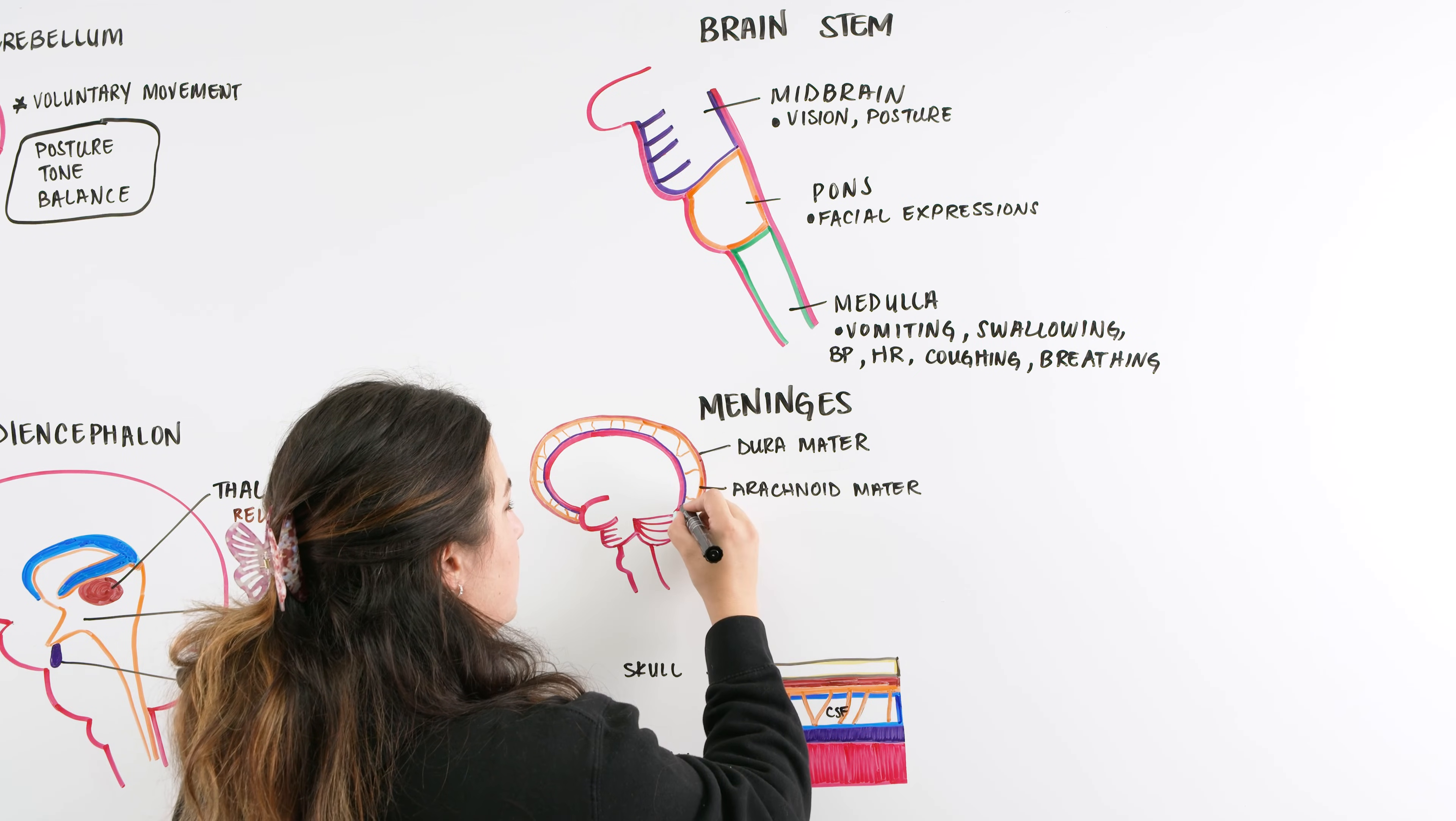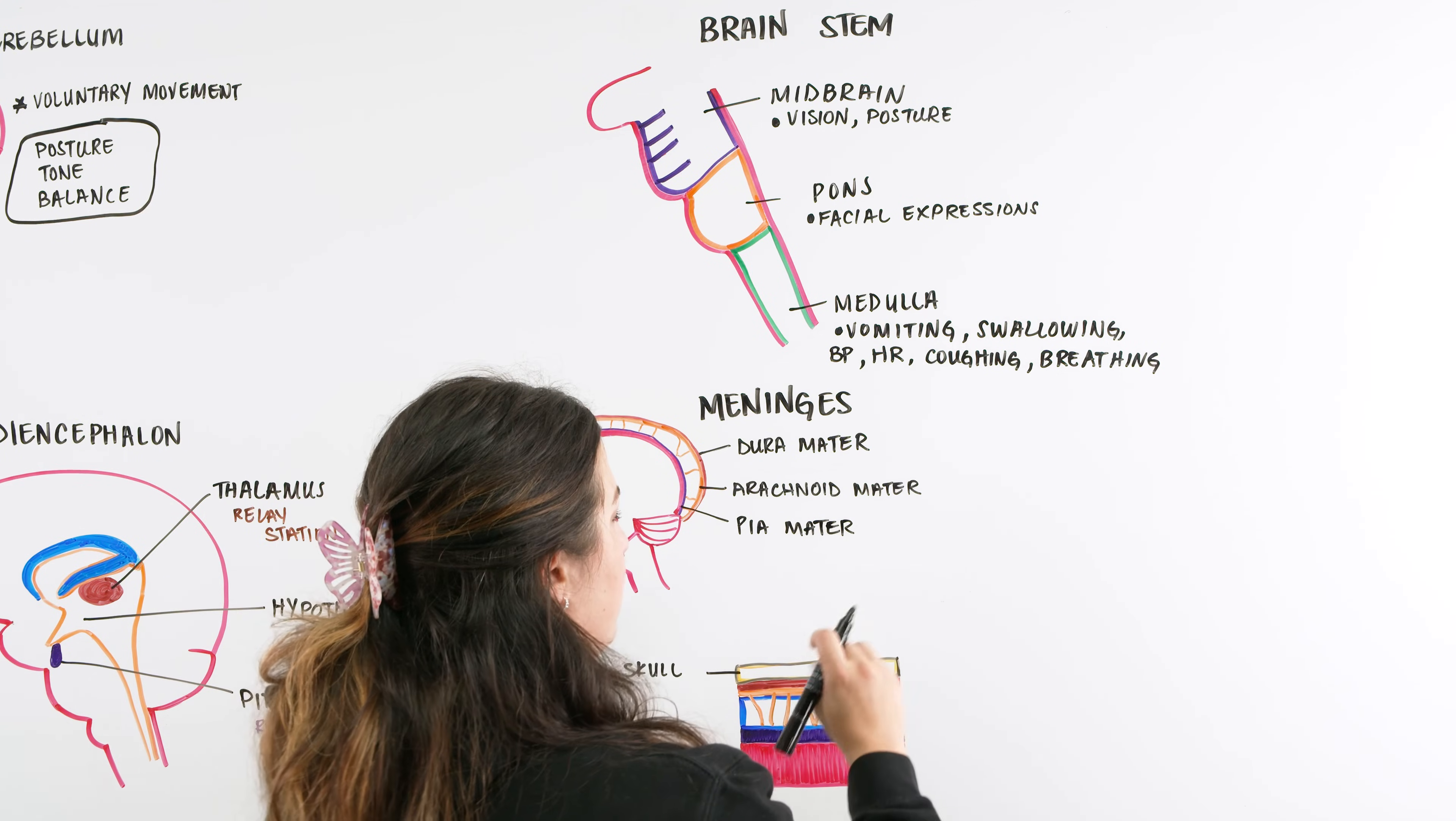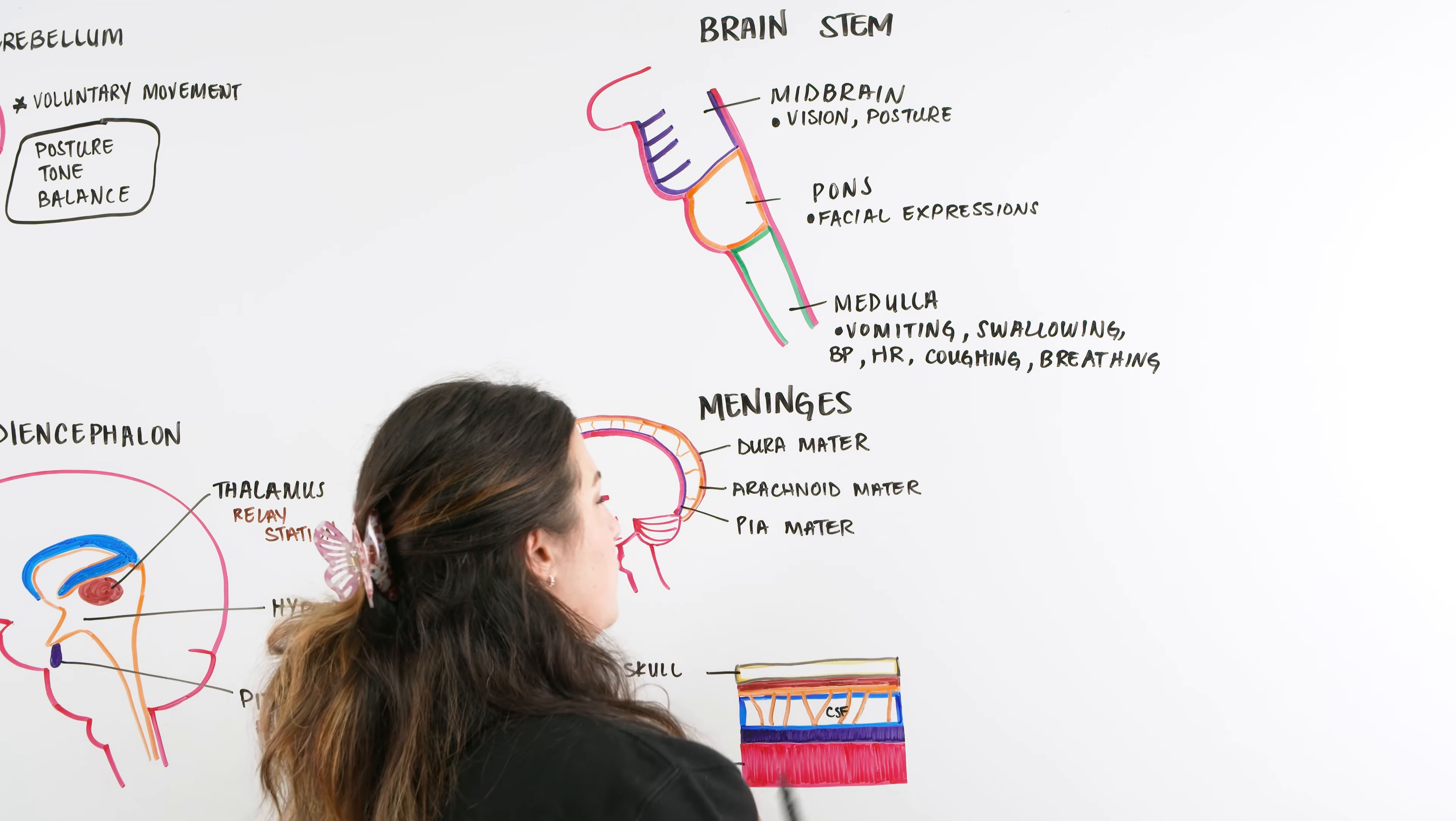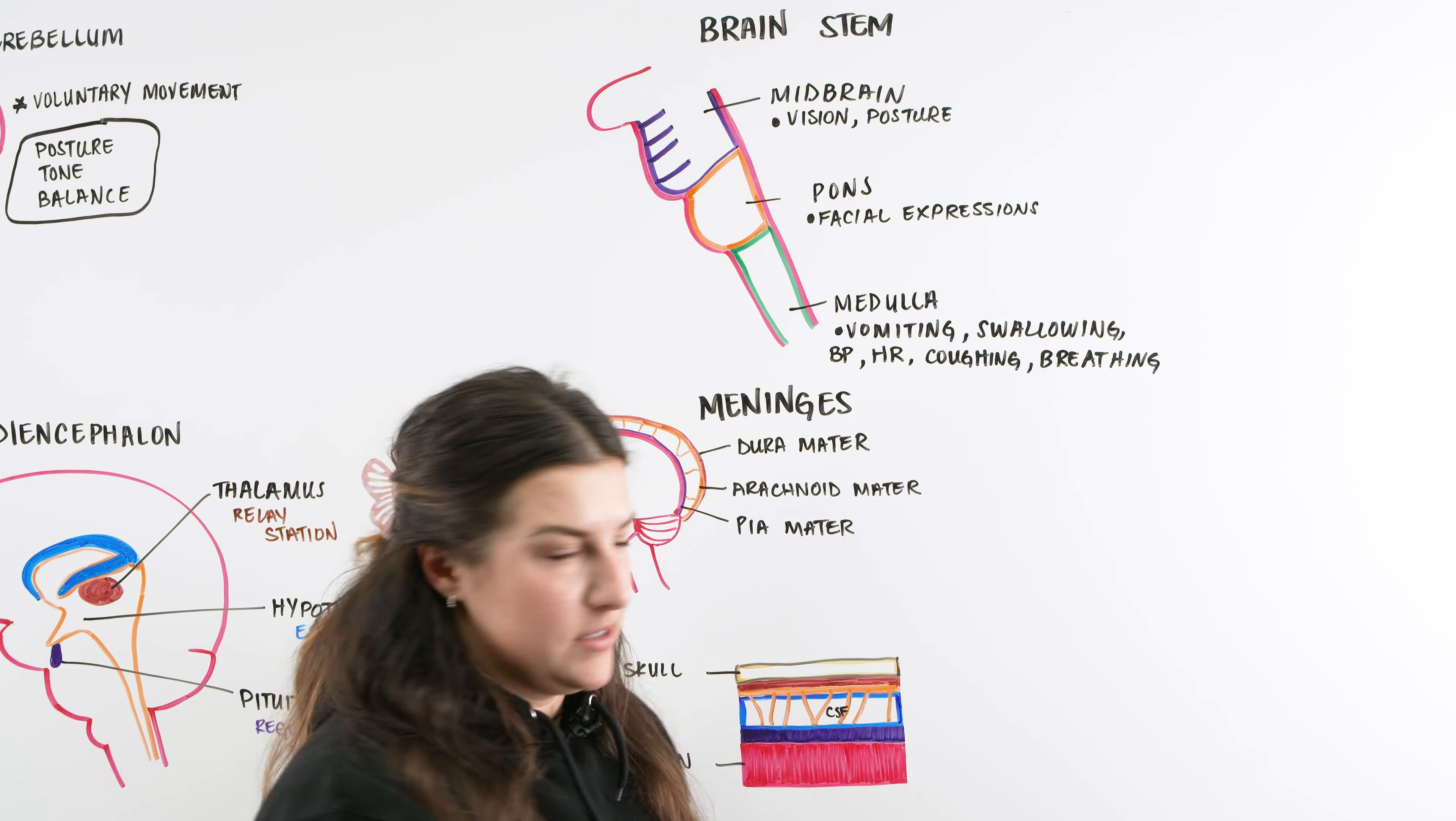The last layer, closest to the brain, is the pia mater. This is the thinnest layer, and it allows for some blood vessels to come up through. It's very thin like tissue paper adhering to the brain. So we have three different layers, and this is the meninges. If we have any type of infection within the cerebral spinal fluid or within the meninges themselves, we can call that meningitis.